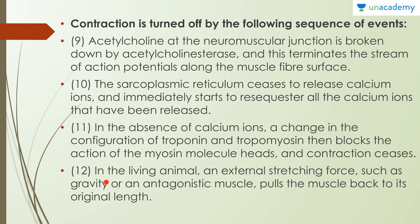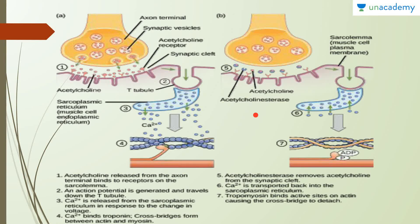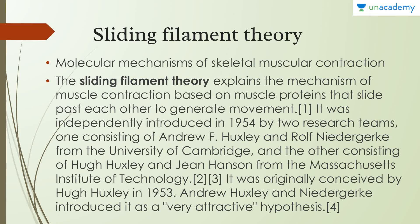In the living animal, an external stretching force such as gravity or an antagonistic muscle pulls the muscle back to its original length. Diagrammatically, acetylcholinesterase removes acetylcholine from the synaptic cleft, the action potential on the sarcolemma is broken, and all the calcium ions return to the sarcoplasmic reticulum. The myosin head which was joined to actin now separates. Ca²⁺ is transported back to the sarcoplasmic reticulum and tropomyosin blocks the active sites on actin, causing the cross-bridges to detach.